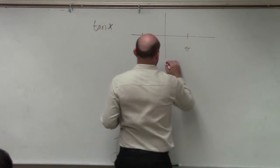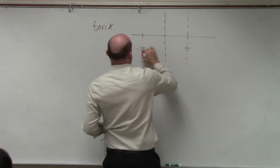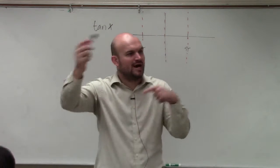So the tangent of x has asymptotes. Because if you guys remember, when we were evaluating on the unit circle, tangent is y over x, right?